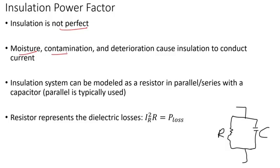There can be moisture, contamination. Insulation deteriorates over time and can cause the insulation to conduct current, creating a conductive or conducting path. The insulation system can be modeled as a resistor in parallel or in series.